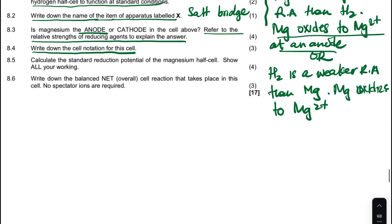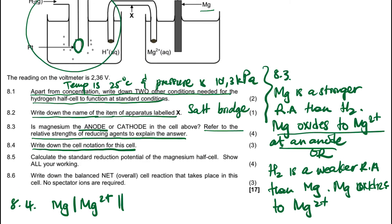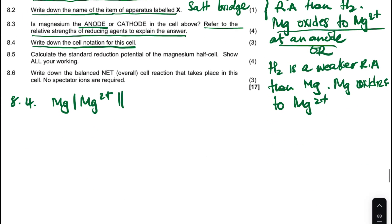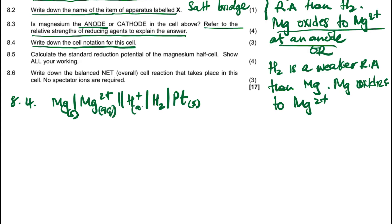For 8.4, write down the cell notation. The cell notation format is: anode | salt bridge | cathode. The anode is magnesium, then state change to Mg²⁺, then the salt bridge, then the cathode side. On the cathode side we have platinum as a solid and an aqueous solution, so we write H⁺ then state change to hydrogen gas, then platinum. You get full marks without showing the state symbols.